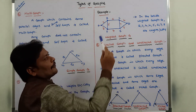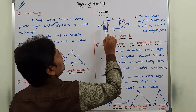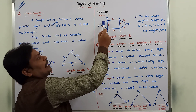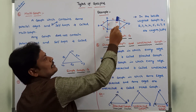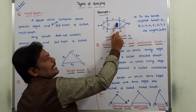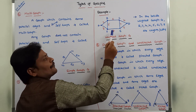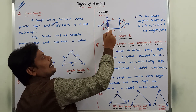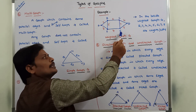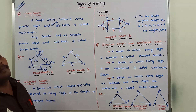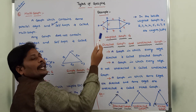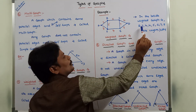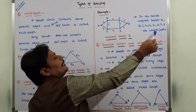In this graph, the weights are: A to B is 2, B to C is 6, C to D is 4, C to E is 7, E to D is 8, F to E is 4, A to F is 3, B to F is 5. These are called the weights or costs. Since this is an undirected graph, C to E weight is 7, and E to C weight is also 7. Similarly, A to B is 2 and B to A is also 2.